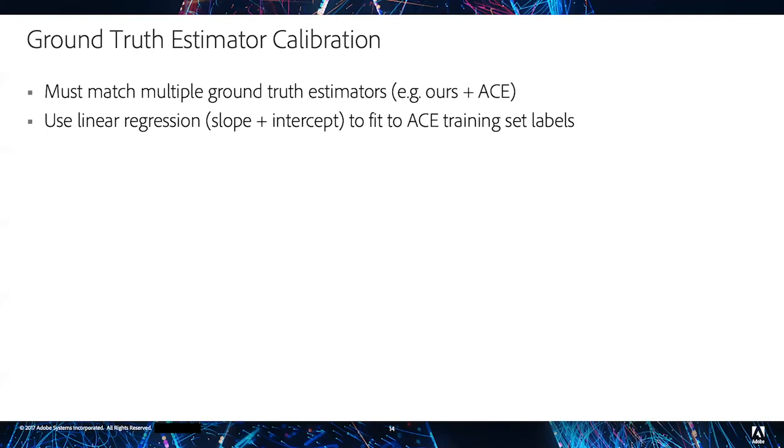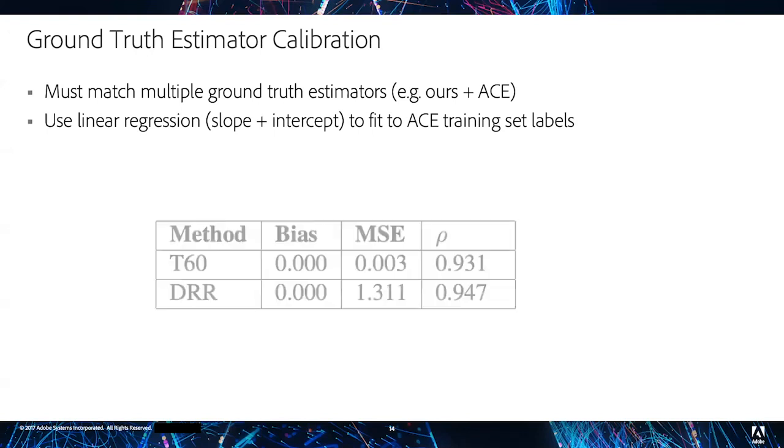When we do this, we can view the bias, mean squared error, and Pearson correlation coefficient rho between our ground truth estimators and the ACE challenge estimators to help us quantify a rough empirical upper bound on the performance of any downstream estimator.